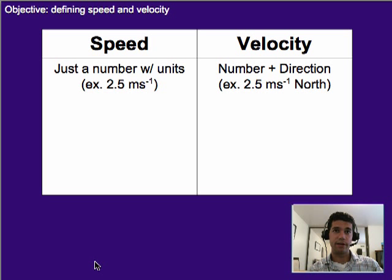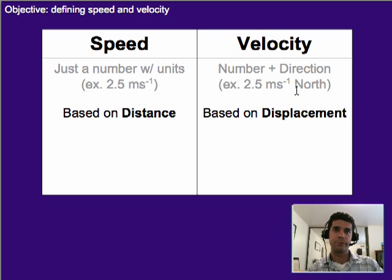If we want to do a quick comparison: speed is just a number with units, such as 2.5 meters per second. Velocity is the number plus the direction, so 2.5 meters per second north. If you're calculating them, speed is based on distance, whereas velocity is based on displacement. Meaning if you aren't taking the shortest path, then velocity has to account for that to some degree. In other words, velocity may not always equal the speed.